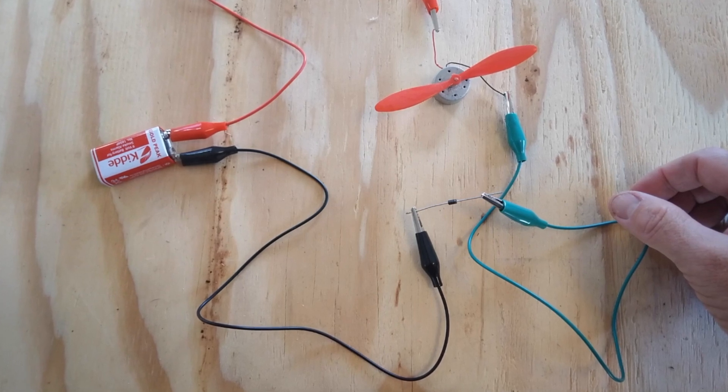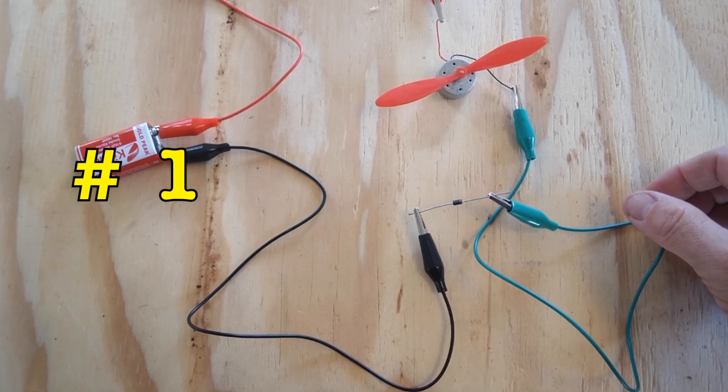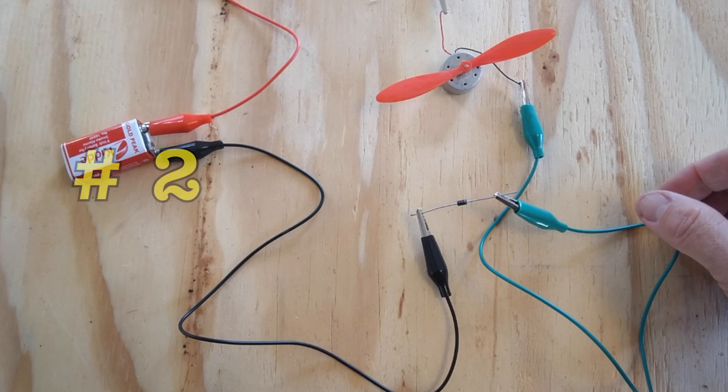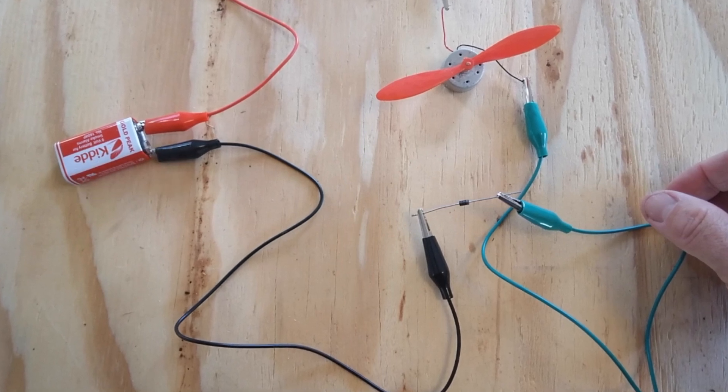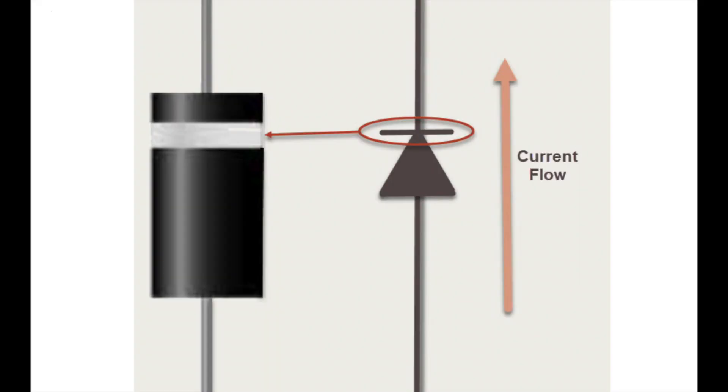Well, it's because of those two pieces of information: that electricity is a flow of electrons from the negative to the positive, and that diode diagram. They're from two different schools of thought, and they don't mix. That diode diagram isn't indicating the flow of electrons as a current.